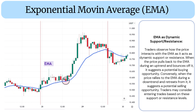EMA as Dynamic Support/Resistance: Traders observe how the price interacts with the EMA as it acts as dynamic support or resistance. When the price pulls back to the EMA during an uptrend and bounces off it, it suggests a potential buying opportunity. Conversely, when the price rallies to the EMA during a downtrend and retreats from it, it suggests a potential selling opportunity.